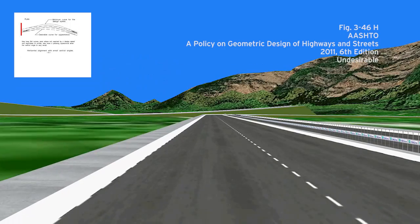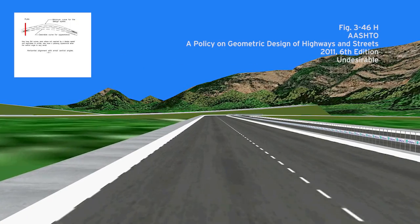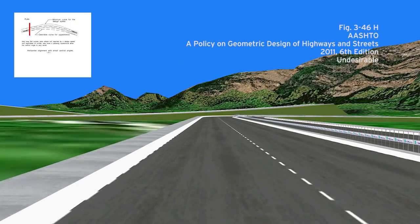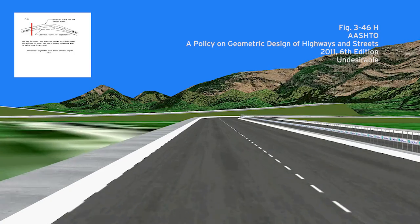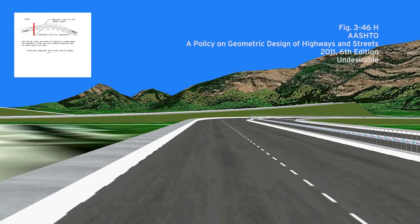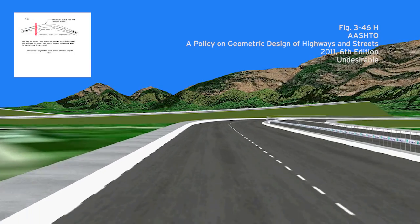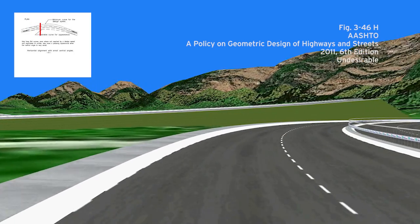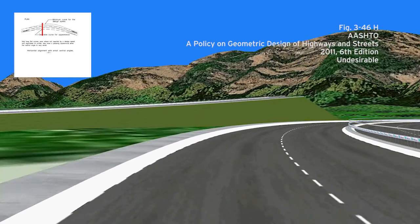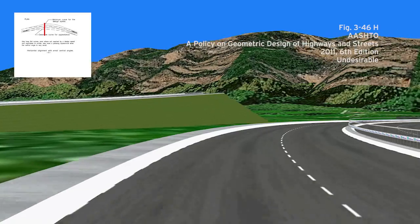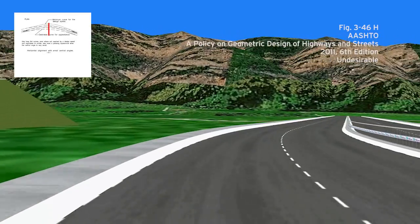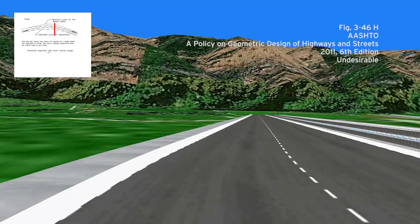Figure H illustrates that curves with a large radius are more desirable than a small radius, even if it is not required for the design speed. The first example shows a small radius, and the second example shows a larger radius.